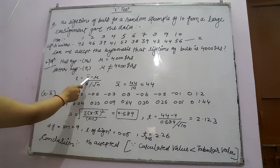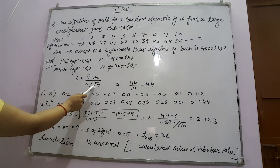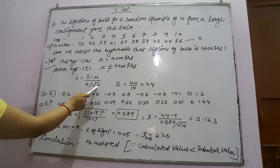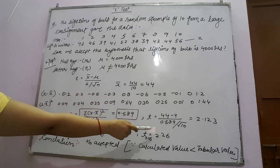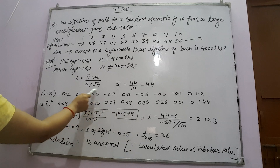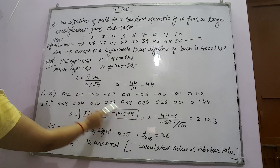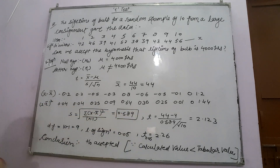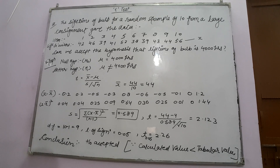Now the T-Test formula is T = (X̄ − μ) / (S / √N). We put in all the values: X̄ = 4.4, S = 0.589, and √N = √10. After substituting, the calculated value of T comes out to be 2.123.